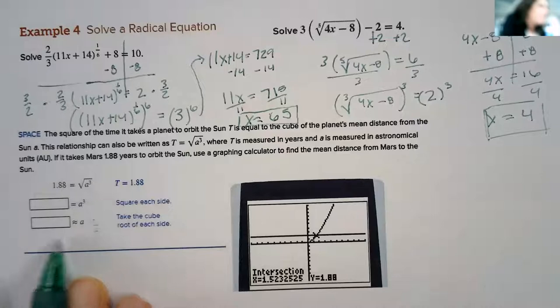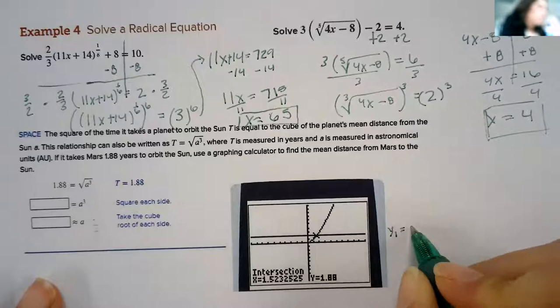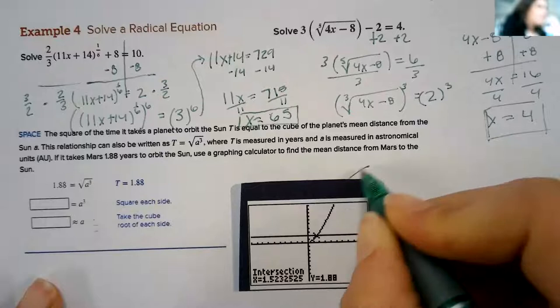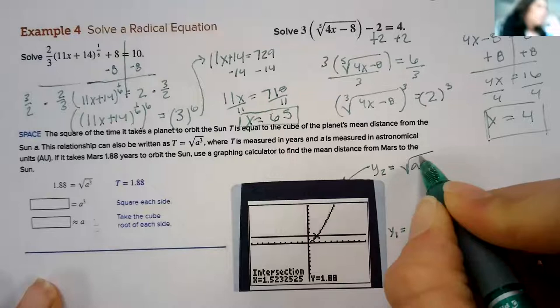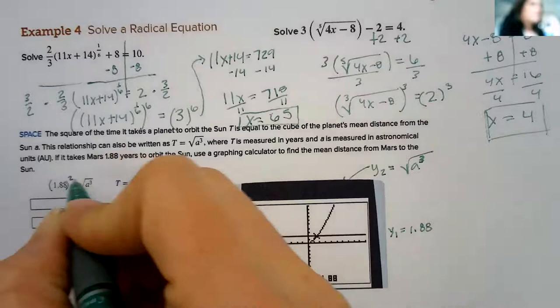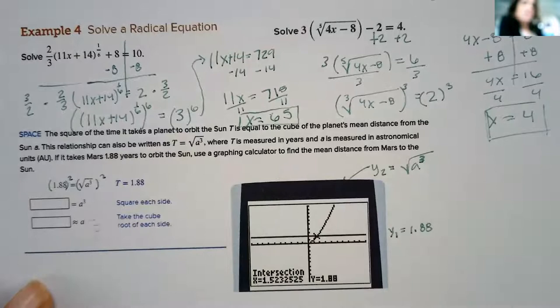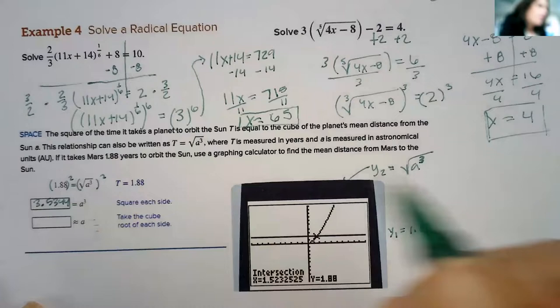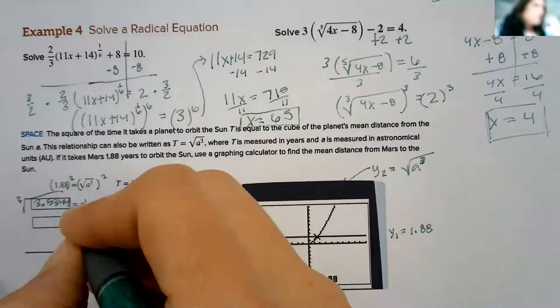Plugged in to y1, they plugged in 1.88, and then into y2 they plugged in the square root of a cubed. And then we look to see where it intersected. We're going to solve it. You would square both sides. a cubed equals 1.88 squared is 3.5344, and then take a cube root of both sides.